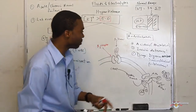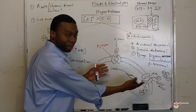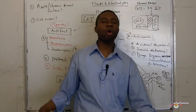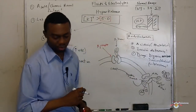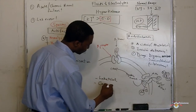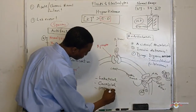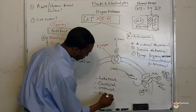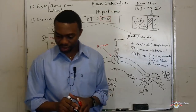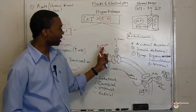The beta blockers most at risk for causing hyperkalemia are non-selective beta blockers — meaning they block both beta-1 and beta-2 receptors. The drugs we're talking about are labetalol, carvedilol, propranolol, and nadolol. All these non-selective beta blockers, when they bind, cause an increased risk of developing hyperkalemia.